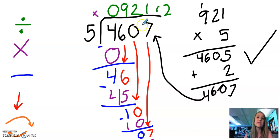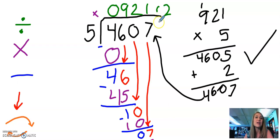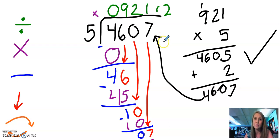4,607 divided by five is 921 with a remainder of two. And that's how we divide using the standard algorithm for long division. Just remember to divide, multiply, and subtract — bring it on down and bring it on back. Thanks for watching.